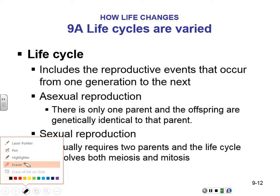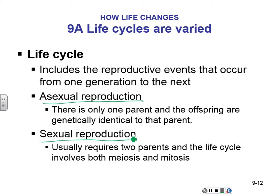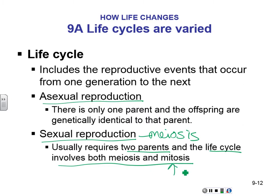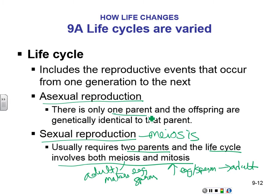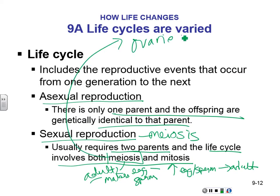Lifecycle: there's asexual reproduction and sexual reproduction. Sexual reproduction requires two parents. The life cycle involves both meiosis and mitosis — mitosis is how you go from a fertilized egg to an adult, while meiosis is how an adult makes egg and sperm. Asexual reproduction has only one parent and the offspring are identical. Meiosis is only happening in the ovaries and the testes.